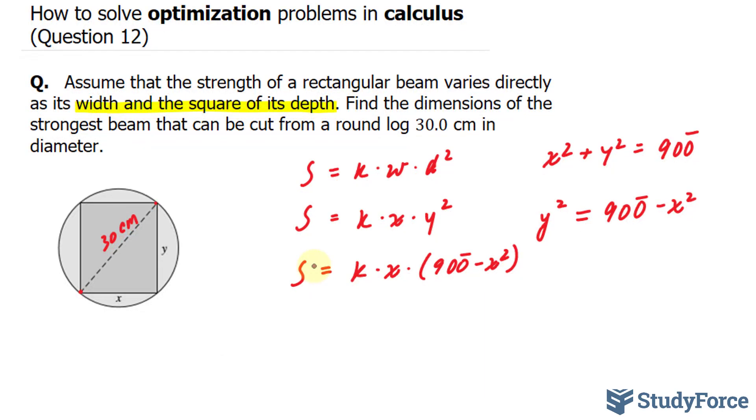Taking the derivative of s, we get ds over dx is equal to, and this time I'll use the product rule. So this is one of my products and this is my second product. Taking the derivative of kx is simply k. Remember, k is a constant.